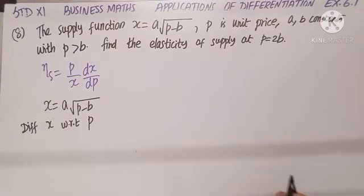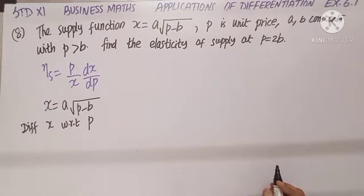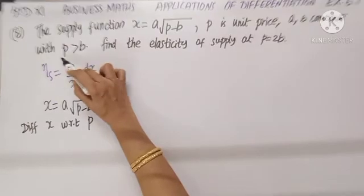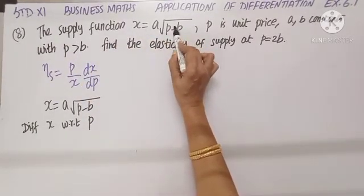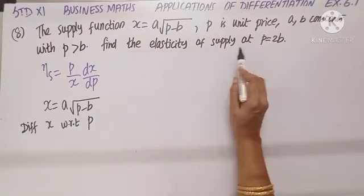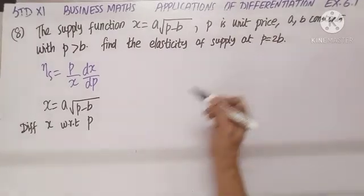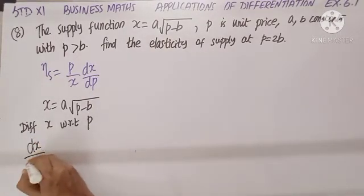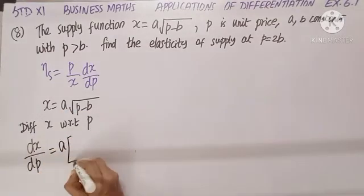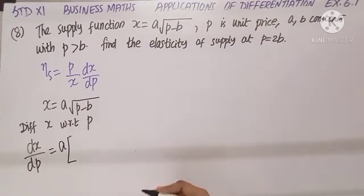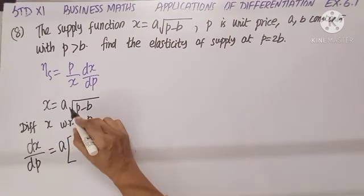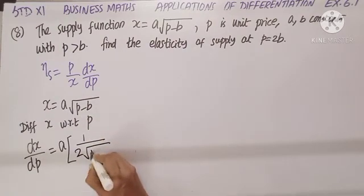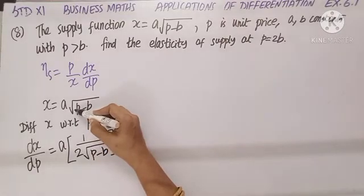Question number 8: the supply function is x equals a times the square root of (p − b), where p is the unit price and a, b are constants with p greater than b, ensuring the expression inside the square root is positive. Find the elasticity of supply at p equals 2b. Differentiating x with respect to p: dx by dp equals a times 1 by 2√(p − b).